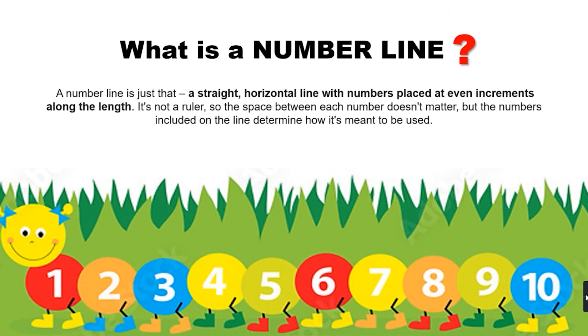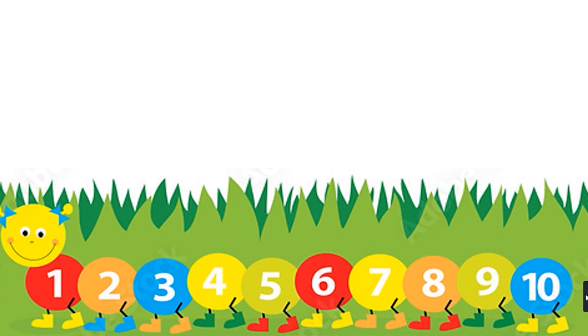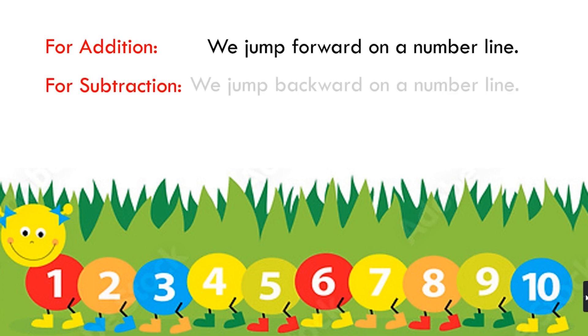A number line is a straight horizontal line with numbers placed at even increments along the length. It is not a ruler so the space between the numbers doesn't matter. For addition we jump forward on a number line and for subtraction we jump backward on a number line.